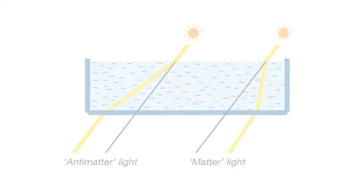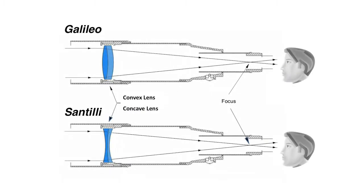As you can see in the diagram, we have two telescopes: the Santilli and the Galileo. If you look closely, you'll see that the only real difference between the two is the lens. Notice that the Galileo uses a convex lens, whereas the Santilli Telescope uses a concave lens.